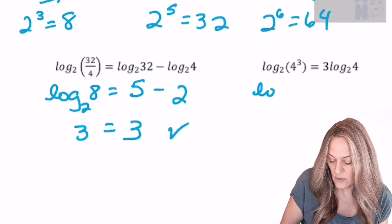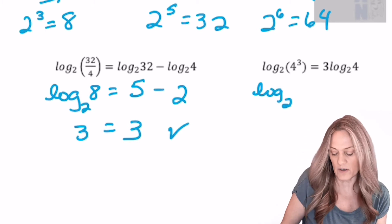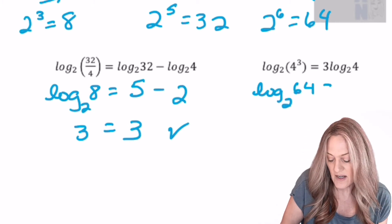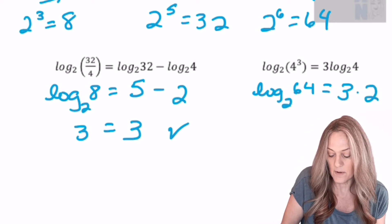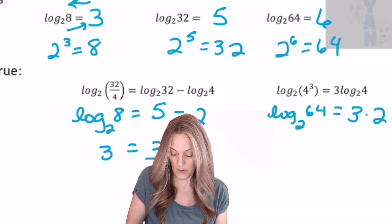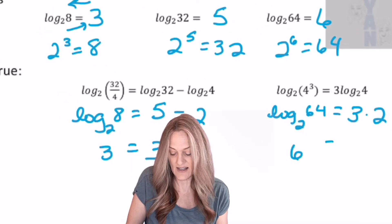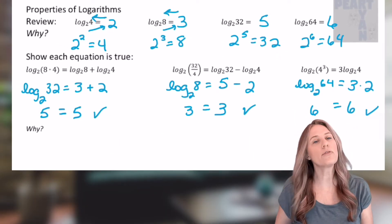Log base 2 of 4 cubed. Okay, so that means we'll go ahead and do the 4 cubed first, get 64. But then on the other side, it's 3 times log base 2 of 4. Okay, so then log base 2 of 64. Well, we have that answer above, and that's 6, and 3 times 2 is 6. So we've verified all three equations.